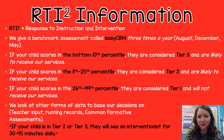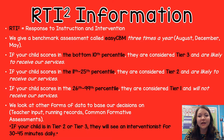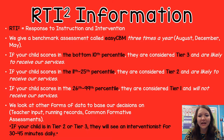RTI squared stands for Response to Instruction and Intervention. We give a benchmark assessment called EZCBM three times a year — once in August, once in December, and once in May. And from there, we take that data and put children into tiers.